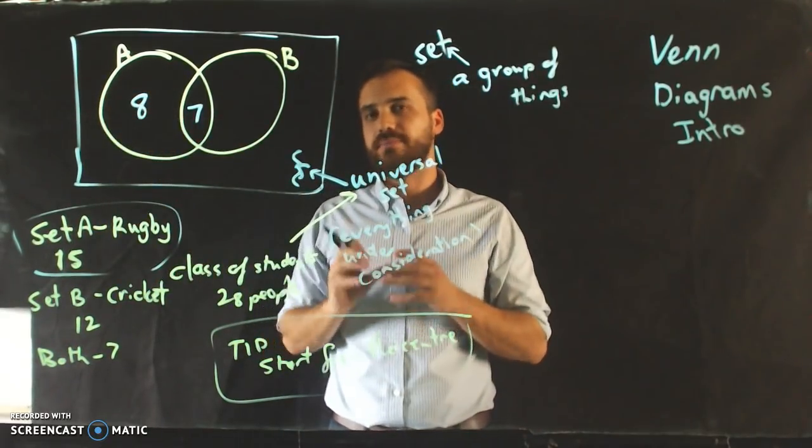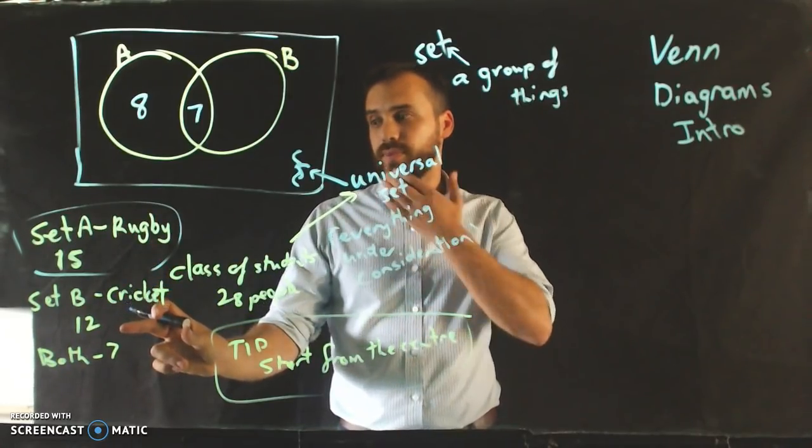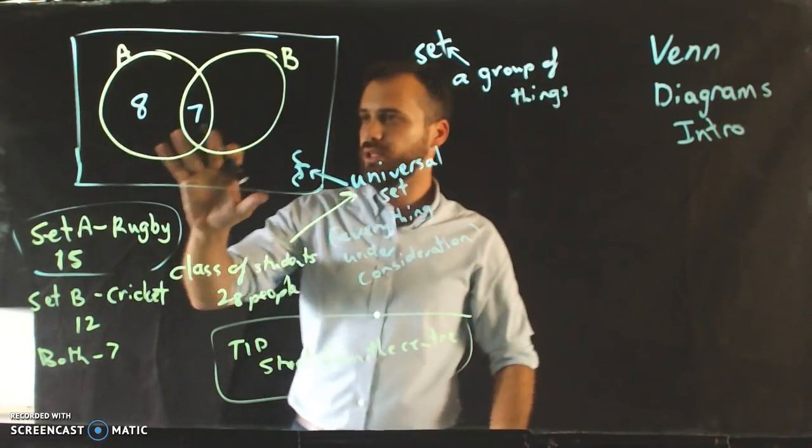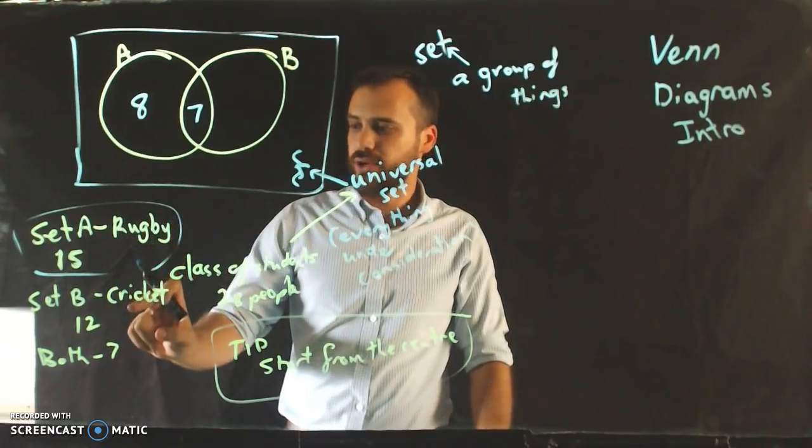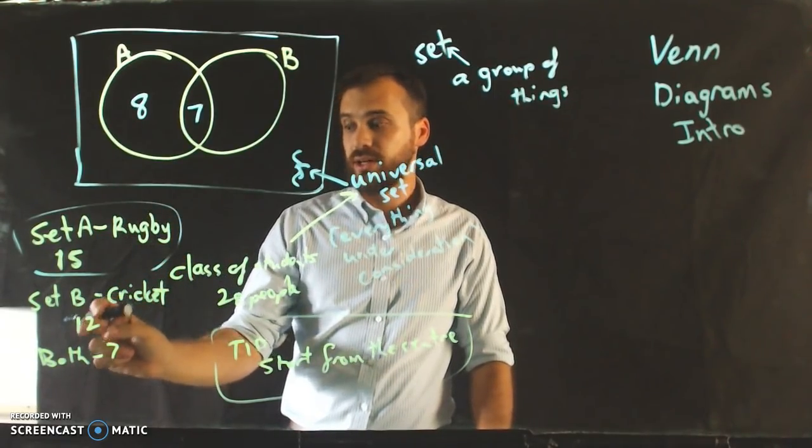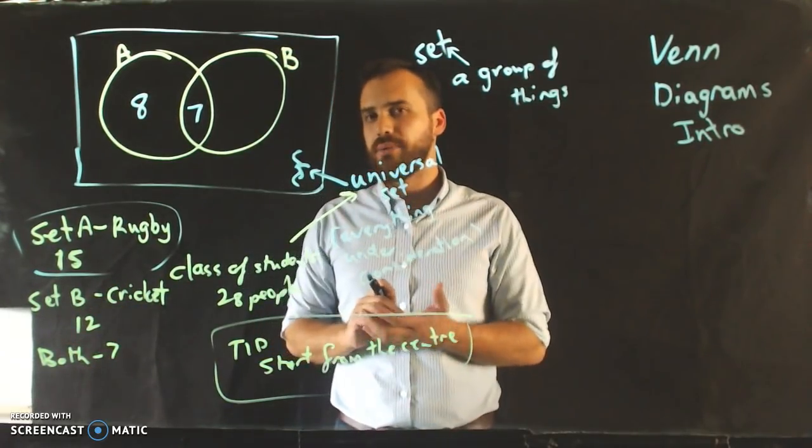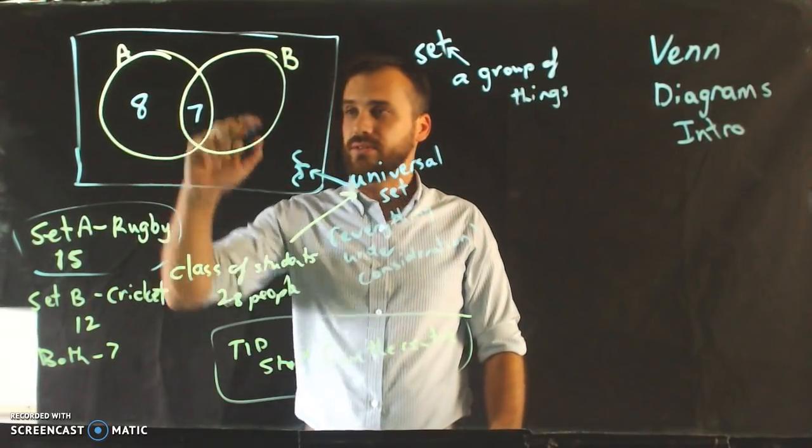Now, those 8 people represent people that play rugby, but definitely don't play cricket. And then we do a similar thing with our cricket ones here. So if we look at this, we have 7 people that play both rugby and cricket. We have 12 people that play cricket. So if we want to figure out how many people just play cricket, it's going to be 12 minus 7, which is 5.